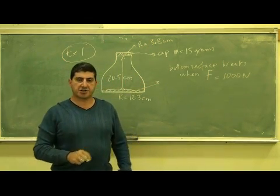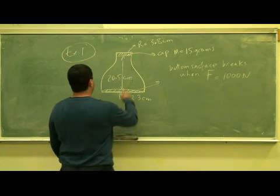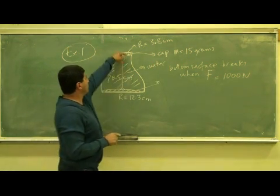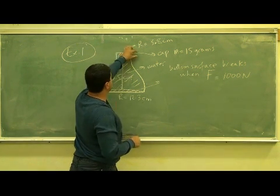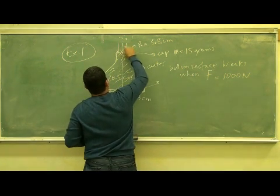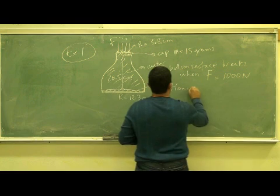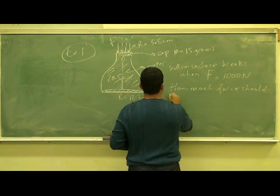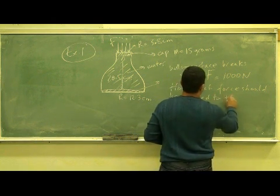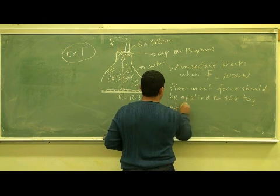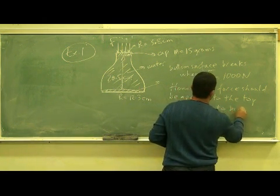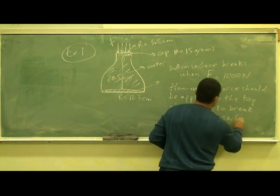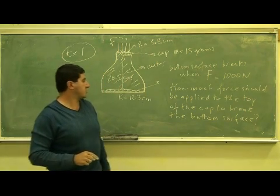So at 1,000 newtons of force the bottom surface falls off. Let's say you have fresh water in the bottle. The question is: on top of the water and on top of the cap, how much force should be applied to the top of the cap to break the bottom surface?